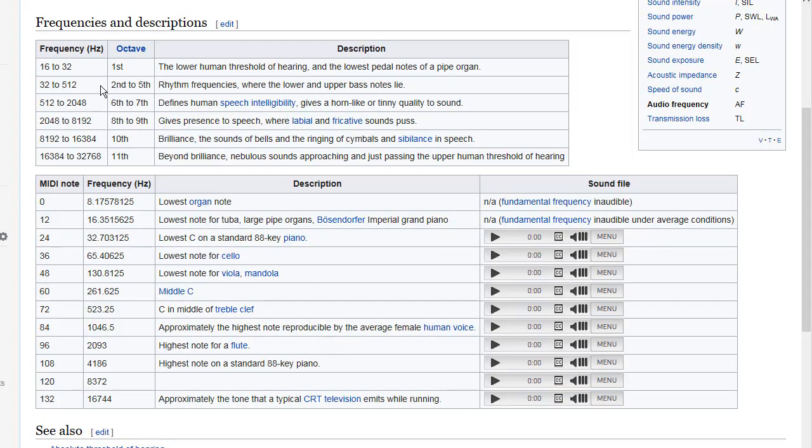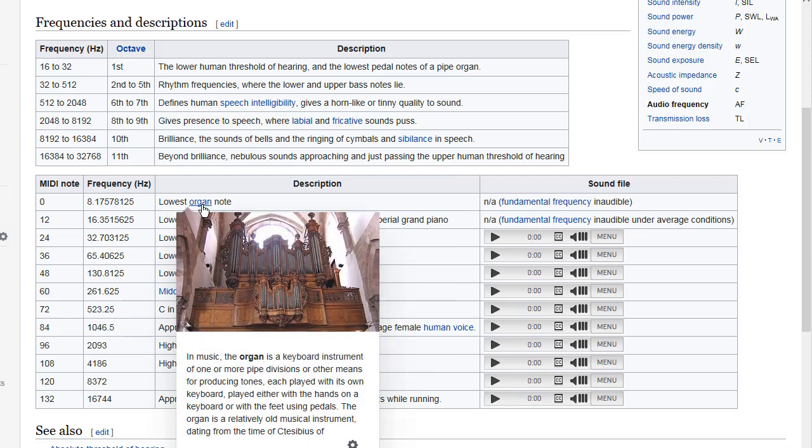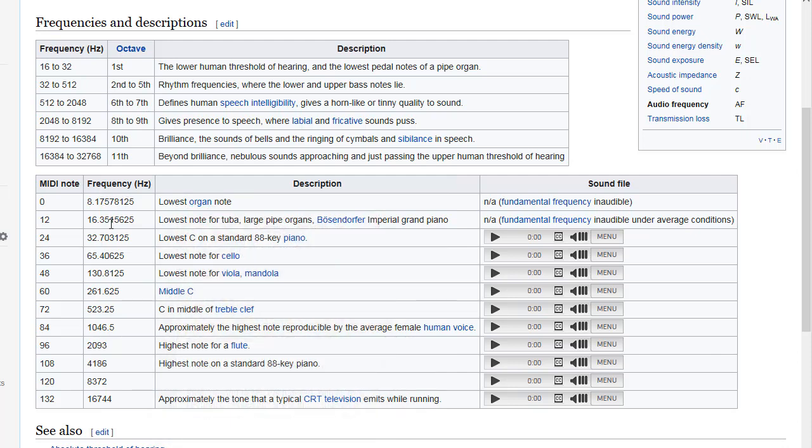What you can see is the lowest human threshold of hearing, around 16 to 32 hertz. So we're getting into the seismic domain here, the lower part of the seismic domain. Bass, 32 to 512. Human speech, 512 hertz to 2048. We're in that frequency range. This is the lowest organ note, 8 hertz. Lowest note for a tuba, large pipe organs, 16.35 hertz. Lowest C on a standard 88-key piano.